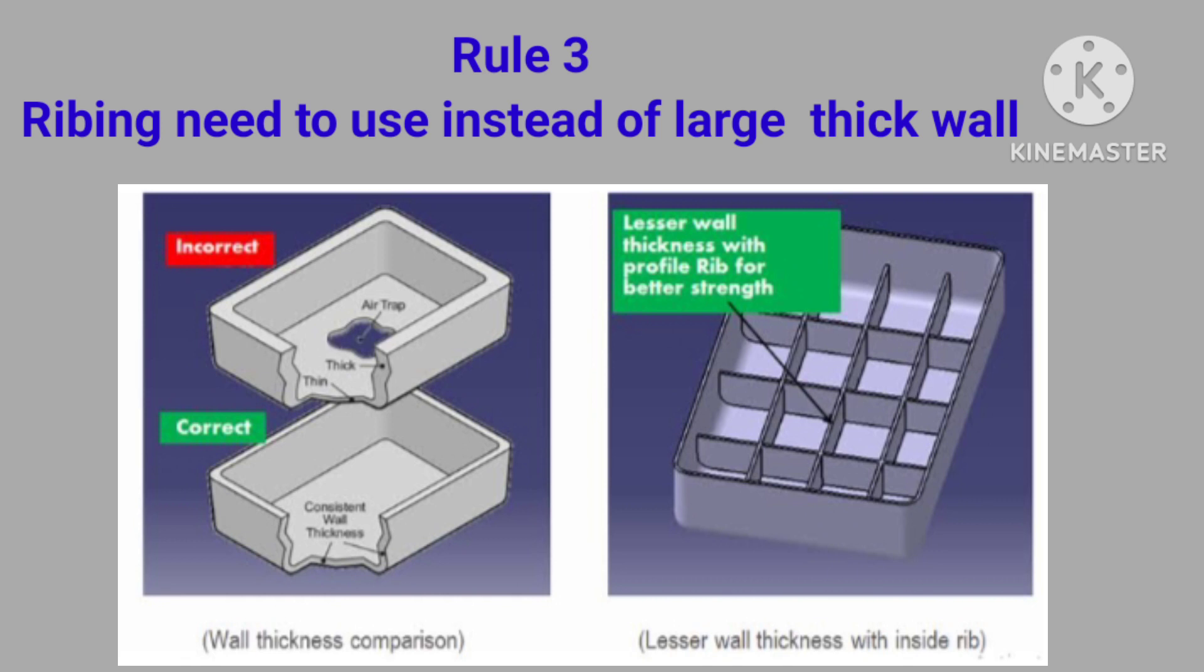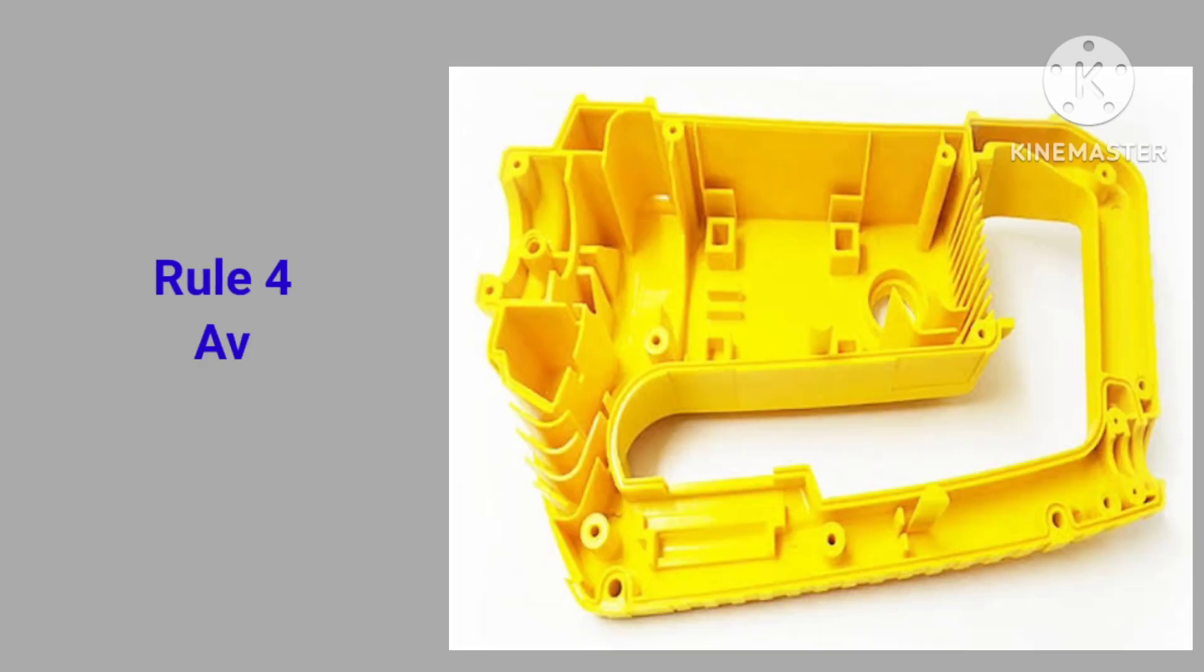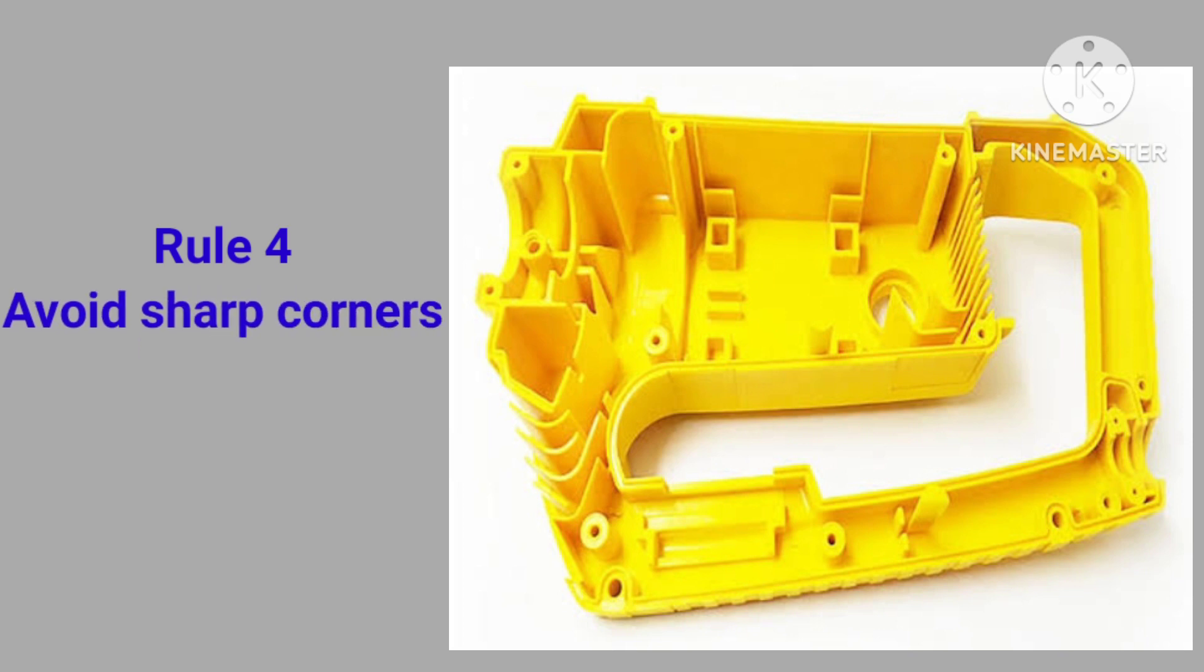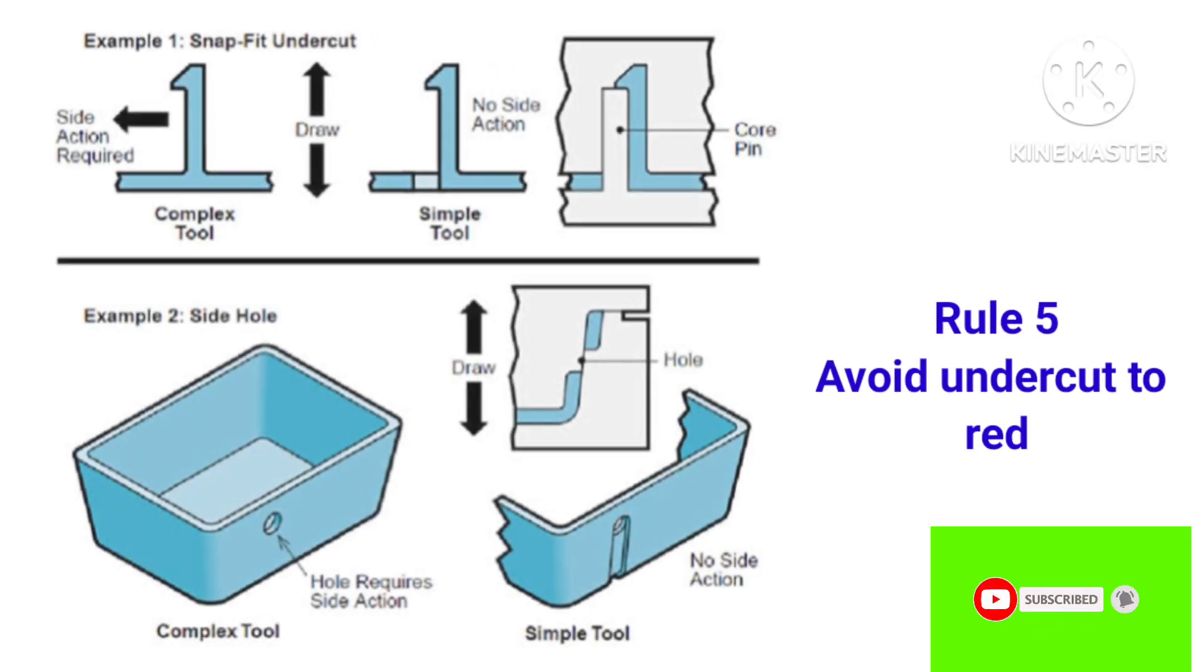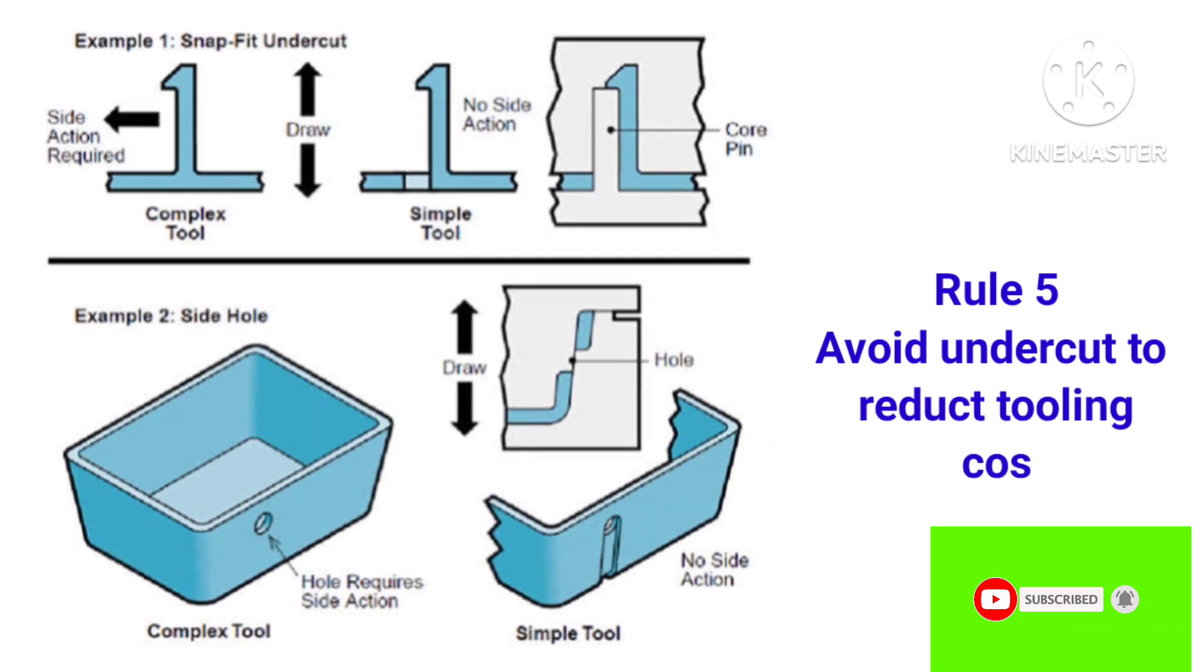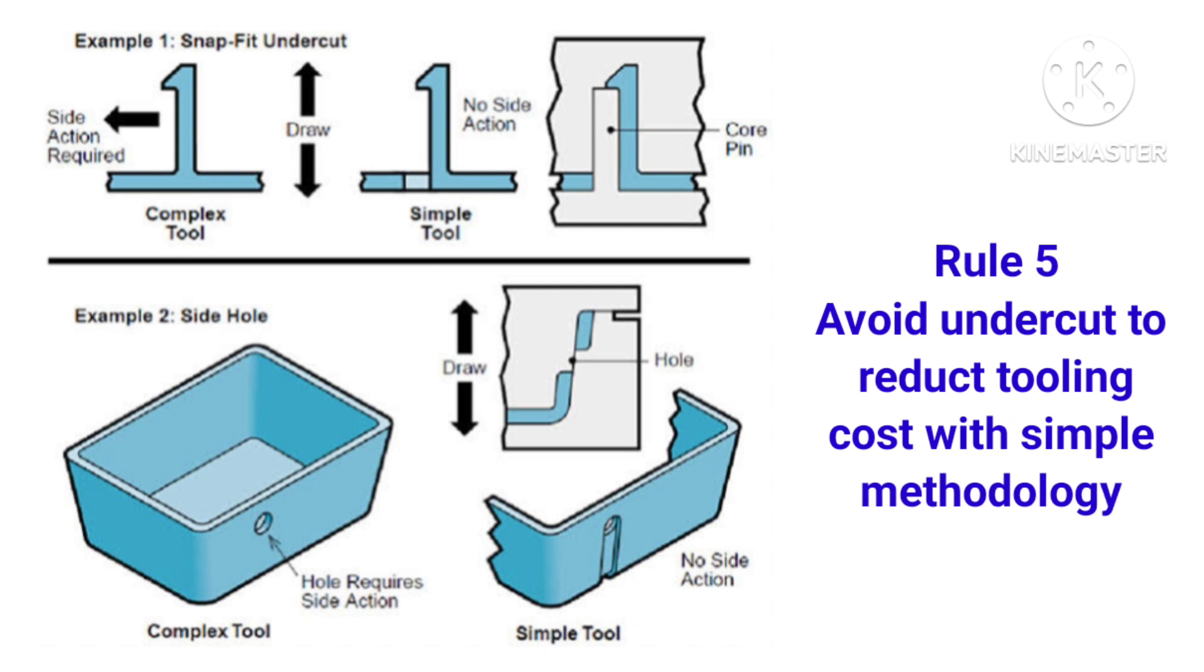Rule number five is about avoiding the undercuts due to high cost. Rule number six is about the use of demolding tapers should provide during the designing for the smooth flow of the molten material.